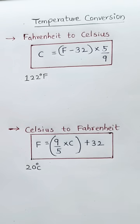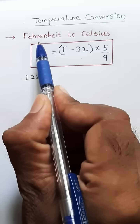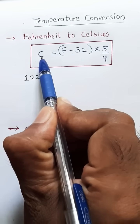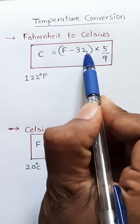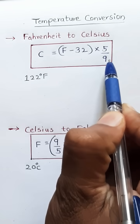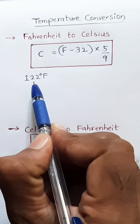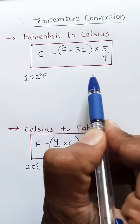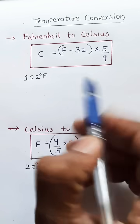Temperature conversion: Fahrenheit to Celsius. The conversion formula is C equal to F minus 32, into 5 by 9. Now we convert 122 Fahrenheit to Celsius.